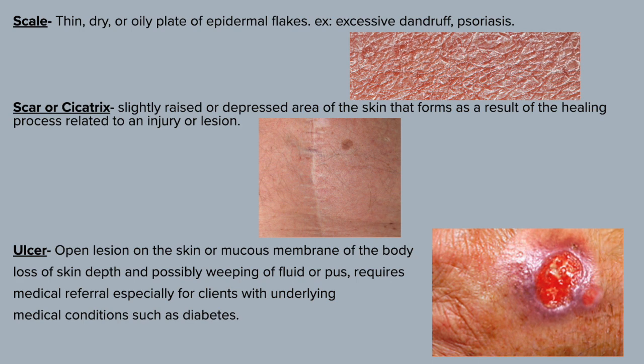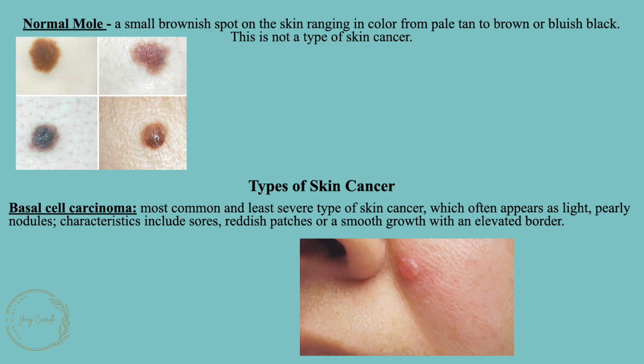A normal mole is a small brownish spot on the skin ranging in color from pale tan to brown or bluish black — this is not a type of skin cancer. The first type of skin cancer is basal cell carcinoma, the most common and least severe type, which often appears as light pearly nodules. Characteristics include sores, reddish patches, or a smooth growth with an elevated border.